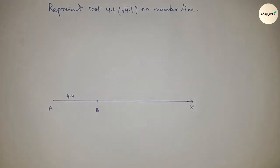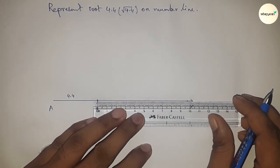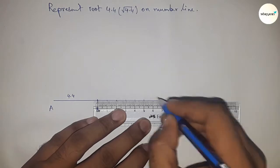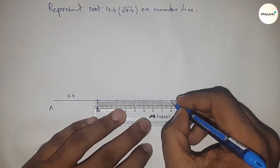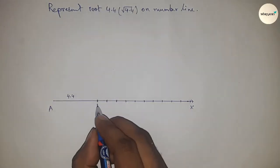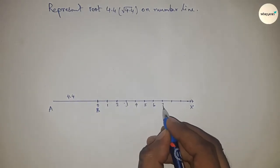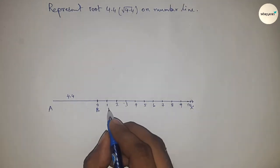Next, having to mark the numbers on the line from B to X by using scale. So this is 0, 1, 2, 3, 4, 5 and so on.